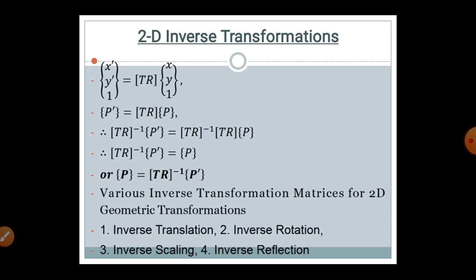The inverse transformation matrix multiplied by the modified function P' is equal to the initial function P. Or, the initial function P can be written as the inverse transformation matrix multiplied by the modified function P'.